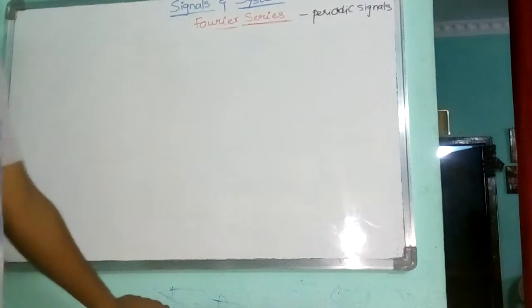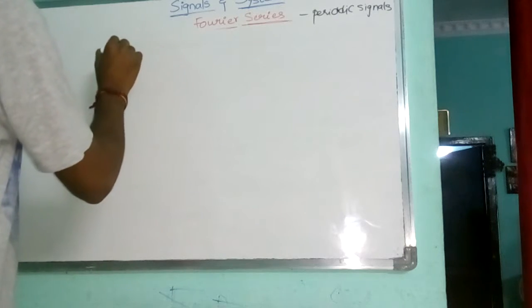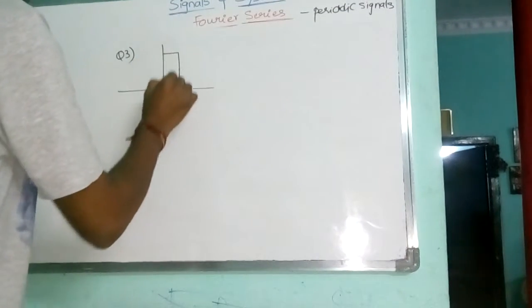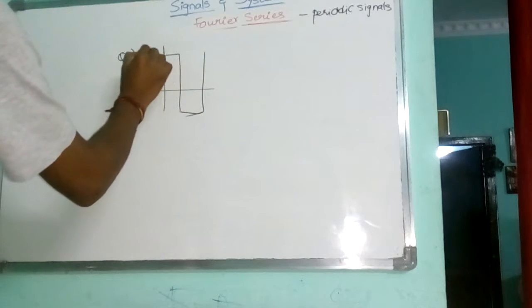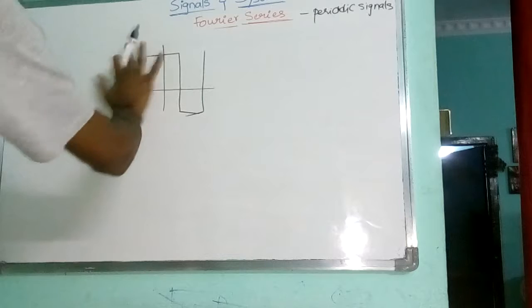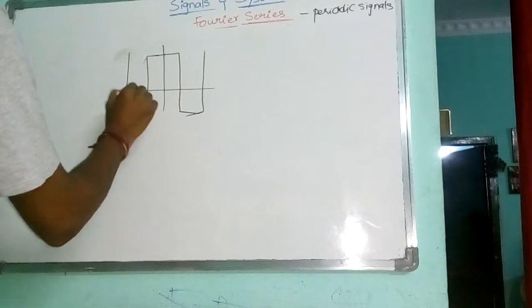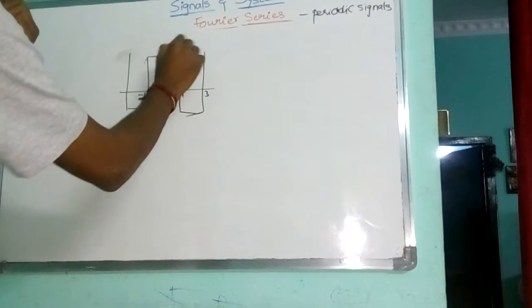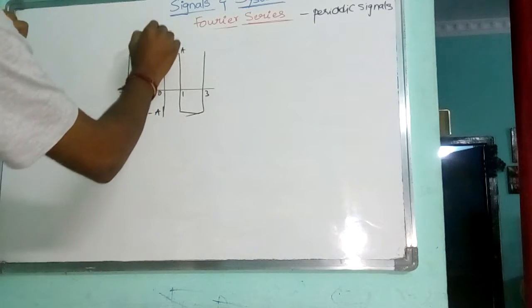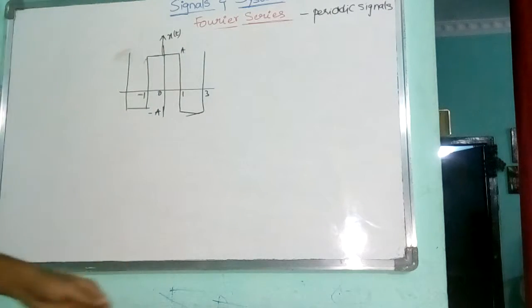Here, we will consider another example of porousness. This is minus 1. This is minus 1. 3. No, this is given as amplitude A. This is minus. This is X of T. Now, this is the signal given.